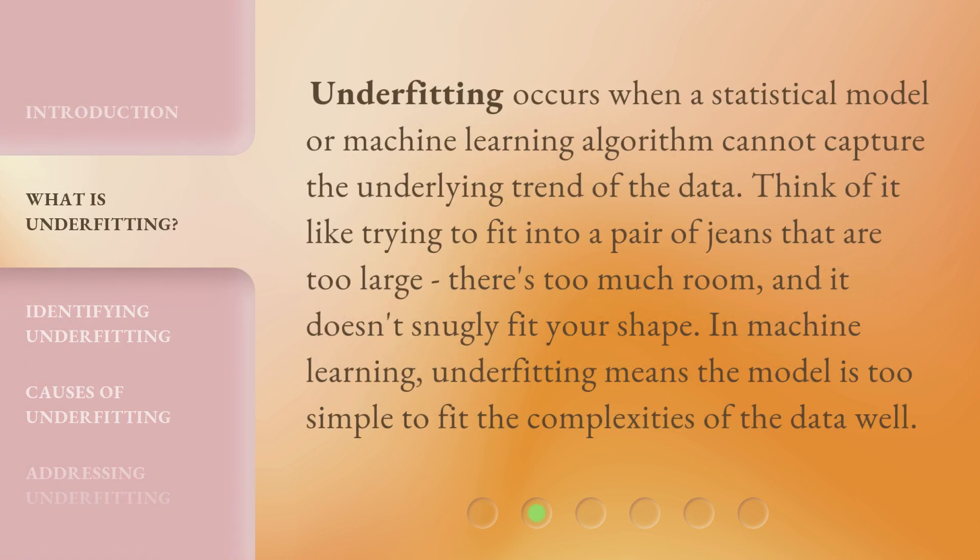Underfitting occurs when a statistical model or machine learning algorithm cannot capture the underlying trend of the data. Think of it like trying to fit into a pair of jeans that are too large. There's too much room, and it doesn't snugly fit your shape. In machine learning, underfitting means the model is too simple to fit the complexities of the data well.